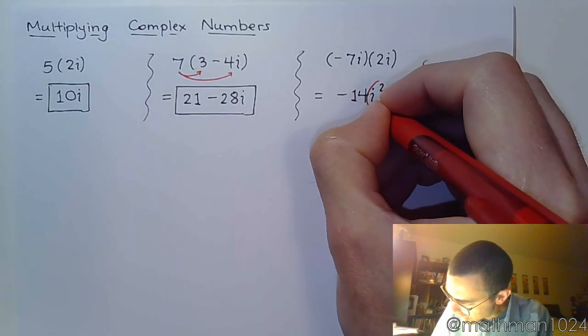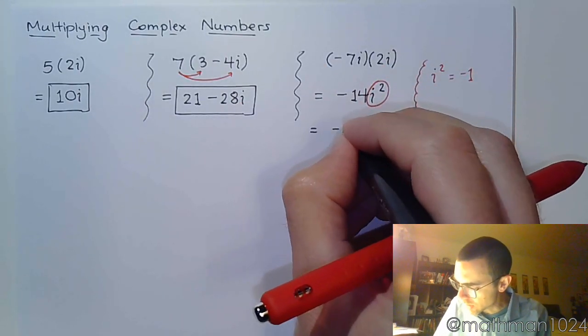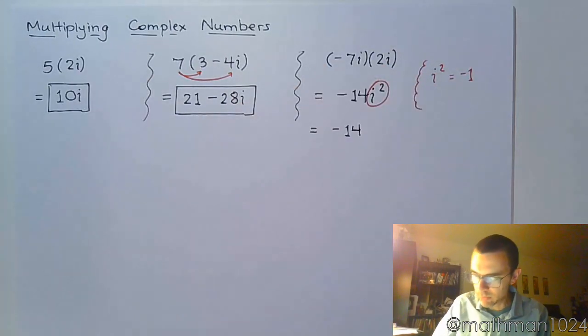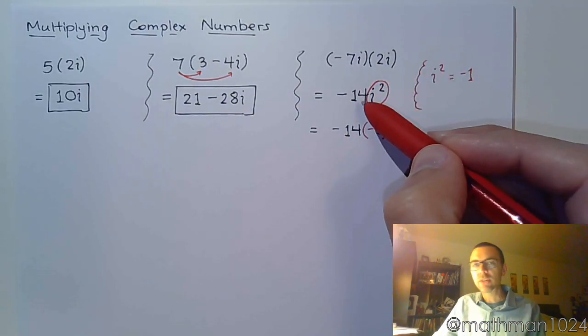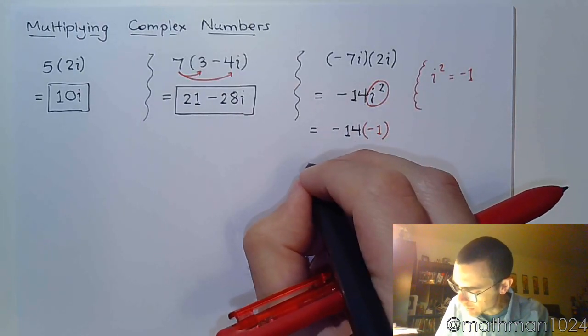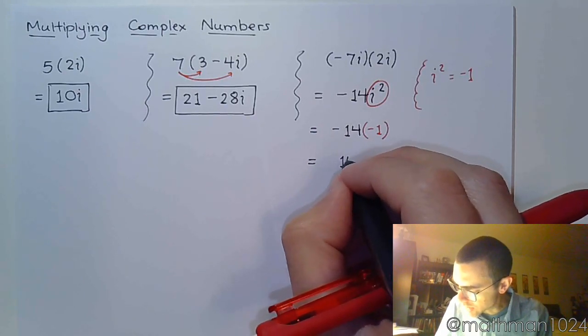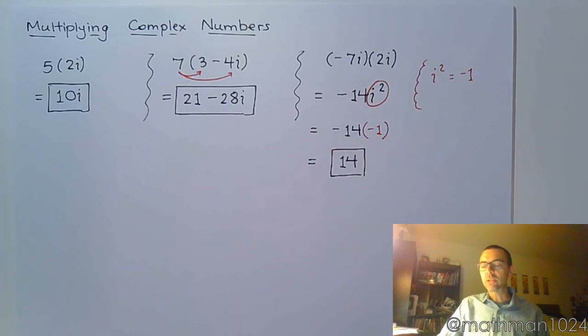So this guy right here is equal to negative 1, so we've got to make sure we rewrite this correctly. So that's still negative 14, but I rewrite this i squared as negative 1. Now keep in mind that this is negative 14 times i squared. So this is negative 14 times negative 1, which gives us positive 14. And that's what you're going to be seeing a lot in these problems is that when you have i squared, it's just going to change the sign of whatever it's connected to.